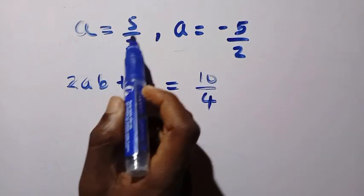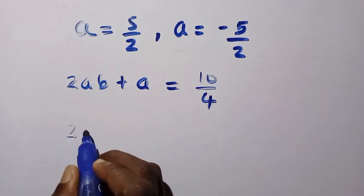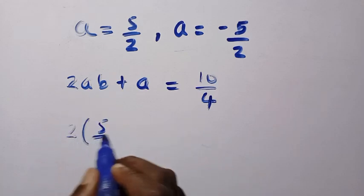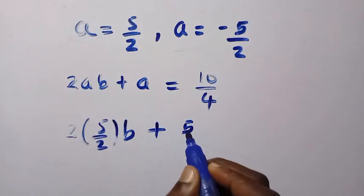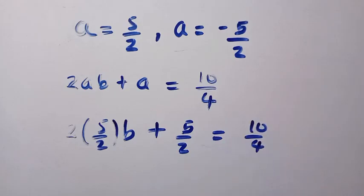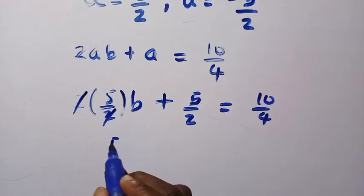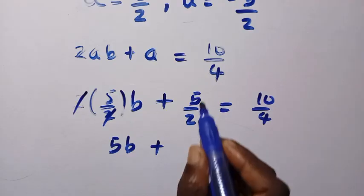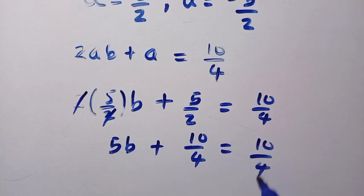When we go for a equals 5 divided by 2, substituting it here, it becomes 2 into bracket of 5 over 2 multiplied by b, then plus 5 over 2 equals 10 over 4. So here 2 cancels 2, and 5 times b gives us 5b plus, here we have 5 over 2, but we can just consider this as 10 divided by 4. This equals 10 over 4.